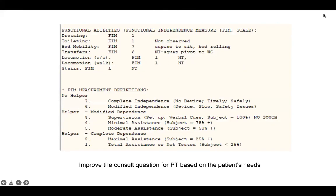These FIM scores are actually in the PT notes, so read the PT notes. If we look at the top, this is an example of a patient. It actually tells you: dressing FIM of 1, toileting FIM of 1, bed mobility FIM of 7, transfers FIM of 6.